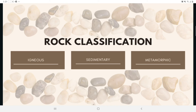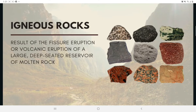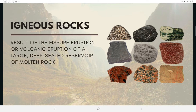On the basis of their mode of origin, rocks can be divided into three basic types: igneous, sedimentary, and metamorphic. Igneous rocks are the result of fissure eruption or volcanic eruption of a large deep-seated reservoir of molten rock, also referred to as magma chambers, most of which are between 1 km and 10 km down. After ejection, some molten lava cools on the surface; sometimes magma cools below the surface to form intrusive igneous rocks called plutons. The type of igneous rock formed depends on the composition of the magma and the rate of cooling.